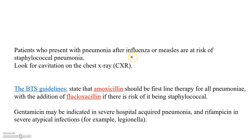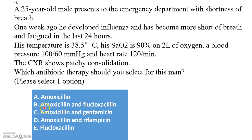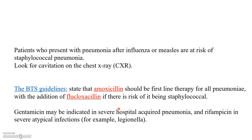Patients who present with pneumonia after influenza or measles are at risk of staphylococcal pneumonia. Always look for cavitation on the chest X-ray. According to the British Thoracic Society guideline, amoxicillin should be first-line therapy for all pneumonia, with the addition of flucloxacillin if there is a risk of staphylococcal infection. So the answer is B — amoxicillin plus flucloxacillin. Gentamicin may be indicated in severe hospital-acquired pneumonia, and rifampicin in severe atypical infections such as Legionella.